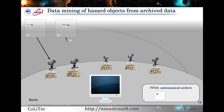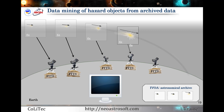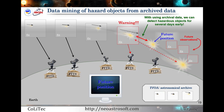When observing potential hazard objects, reaction time is critical. It can be increased by reducing the confirmation time. There is no need to wait for new observations — often it is sufficient to have information contained in high-dimensional archives with public access.